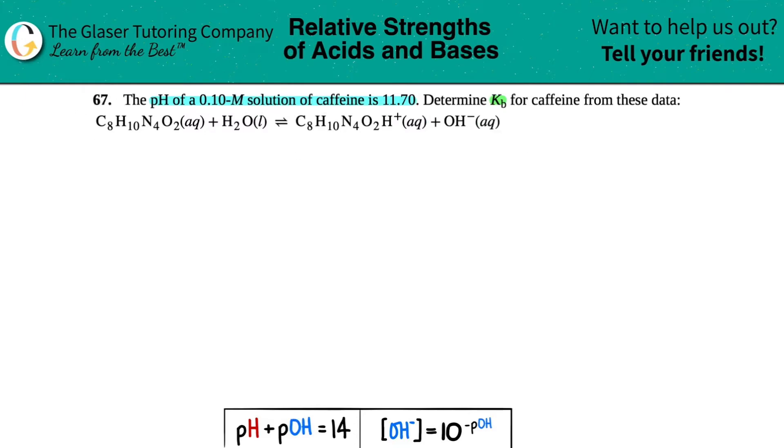So the first thing is, I'm just going to rewrite it a little bit bigger, and then we're going to analyze it. So we have C8H10N4O2, that's aqueous, plus H2O. So they already are giving us a balanced equation.